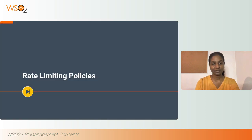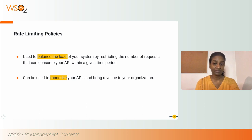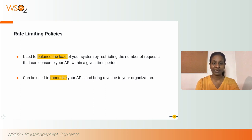Rate Limiting Policies: As the name suggests, rate limiting policies are used to balance the load of your system. They restrict the number of requests that can consume your API within a given time period. These policies can also be used to monetize your APIs and bring revenue to your organization — the consumers who need a higher quota can be charged more than those subscribed to a lower quota.